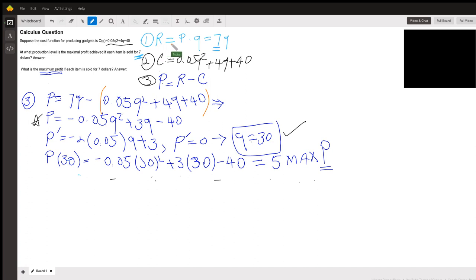Revenue equals price times Q. What is Q? The number of items you need to sell. The price is $7.